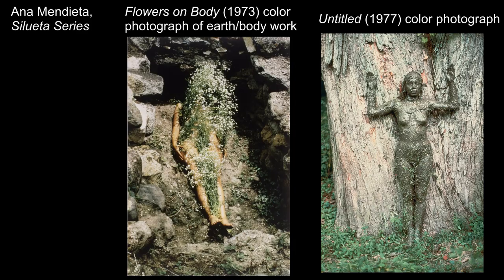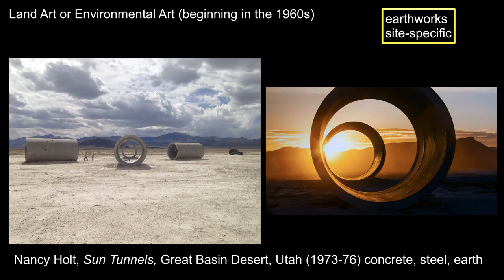Mendieta's earth body works lead into our discussion of works of art completely removed from the context of art galleries, which became a major force in the art world. In land art and environmental art, we see artists using the environment as a medium, creating art out of the earth—earthworks—or creating sculptural structures within a landscape like the sun tunnels shown here. They challenge the definition of sculpture using impermanent or non-art materials. Captured in photographs, they are part of the environment and so change according to nature—wind, rain, and sunlight degrading and changing them.